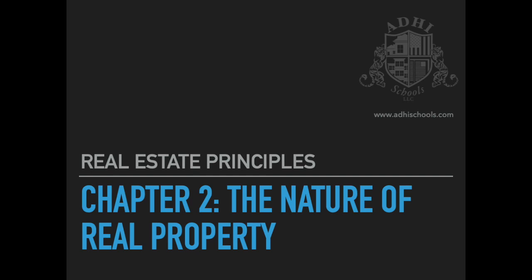The last part of Chapter 2 covers land description. Every piece of real estate, to be sold, must be adequately described — meaning you must have a way to identify the parcel. Many people think an address is a legal description, but it's not. Not every piece of real estate in California has an address; in fact, the majority of California land is rural and doesn't have one.